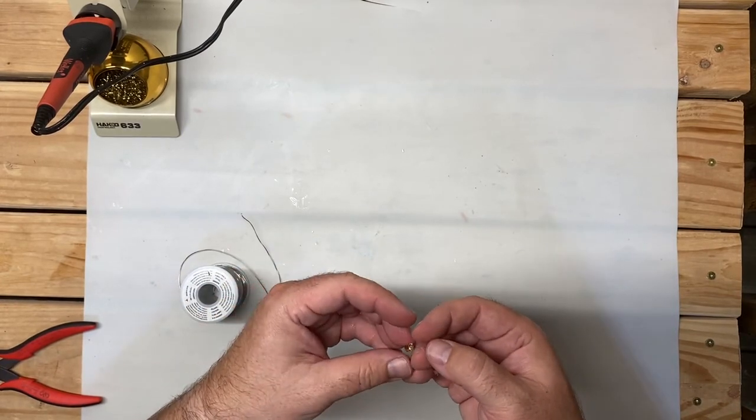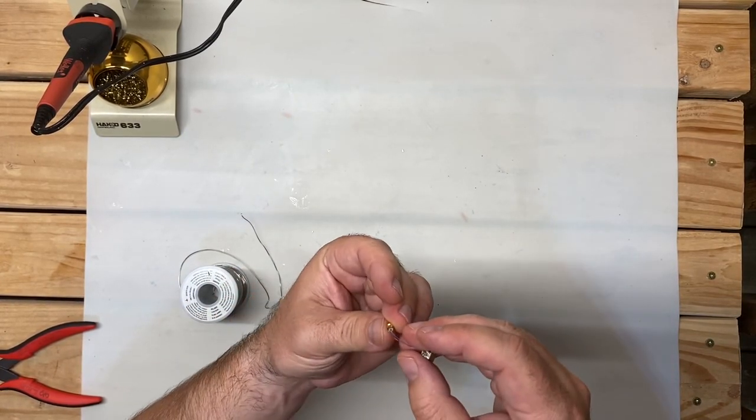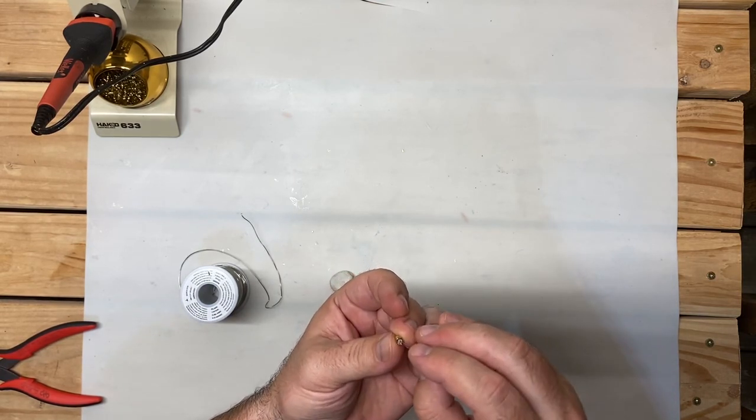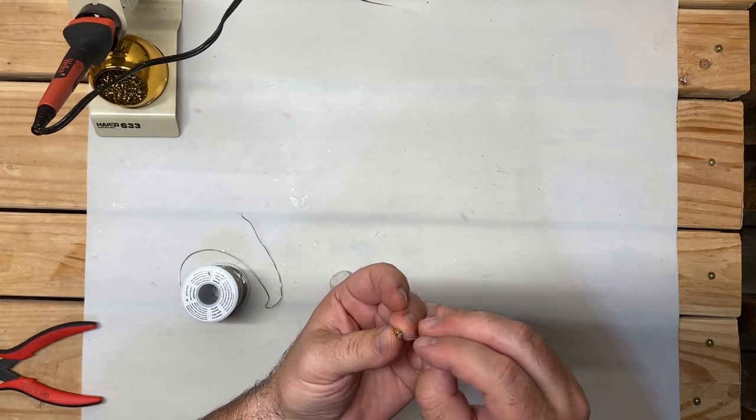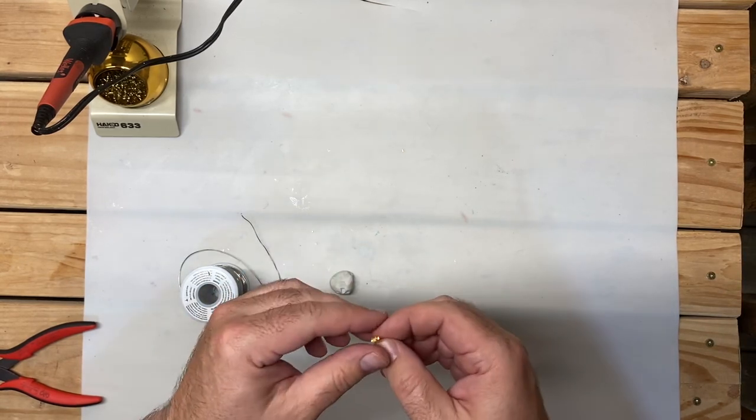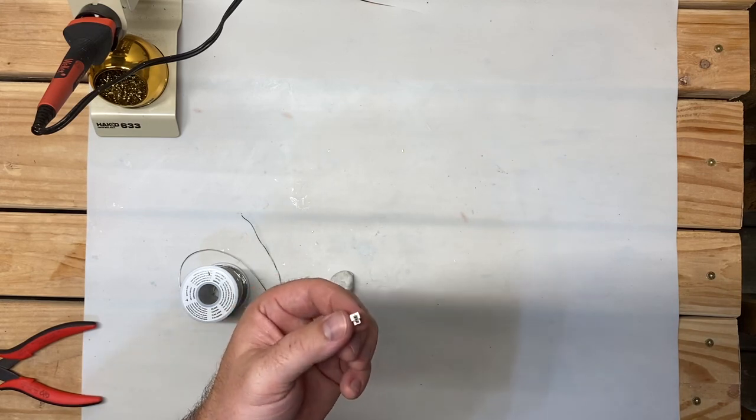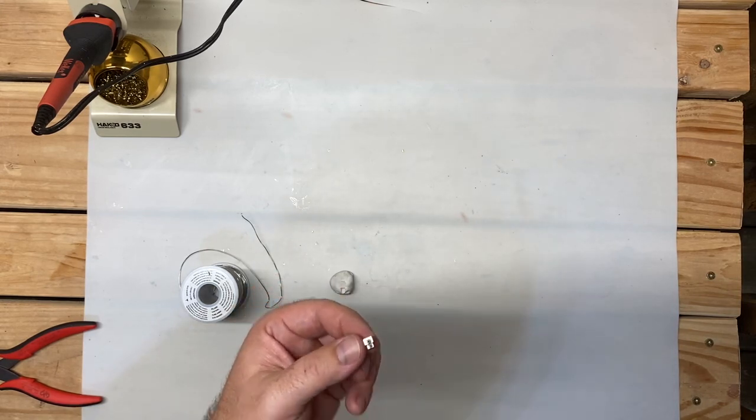On the MMCX connector side, you just want to make sure that the solder has not bridged from the outside of the connector to the inner pull of the connector. This one looks like it's ready to roll. You're ready to hook up some acoustic tubing and start assembling your in-ear monitors. There you go. Thank you.